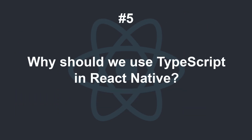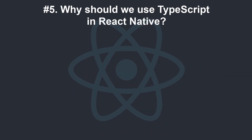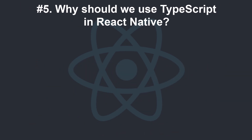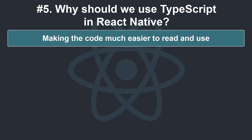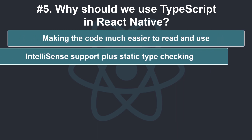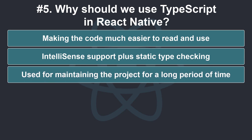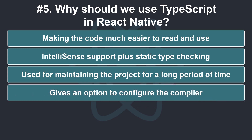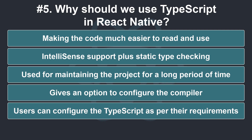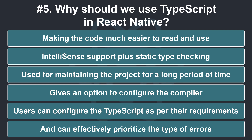Why should we use TypeScript in React Native? With TypeScript, it's easy to define prop types, making the code much easier to read and use, accompanied by IntelliSense support plus static type checking. When a developer wants to maintain a project for a long period of time, they should use TypeScript. Users should configure TypeScript as per their requirements, because it gives an option to configure the compiler and can effectively prioritize the type of errors.